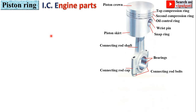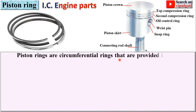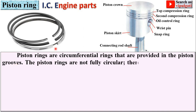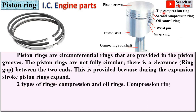Next part: piston rings. Here you can see the piston rings — the topmost ring is the compression ring and the lower one is the oil ring. Generally there are two compression rings: the top compression ring and the second compression ring, and the last one is the oil control ring. The piston rings are circumferential rings provided in the piston grooves. They are not fully circular — there is a clearance called the ring gap between the two ends, provided because piston rings expand due to high temperature during the expansion stroke.